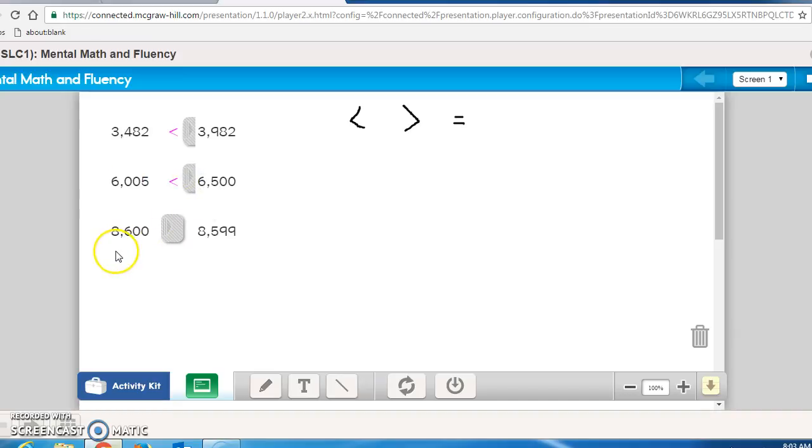And our final comparison, 8,600 versus 8,599. We compare the thousands place, they are the same. We compare the hundreds place, six is larger than five, so 8,600 is greater than 8,599.